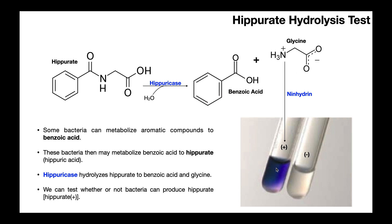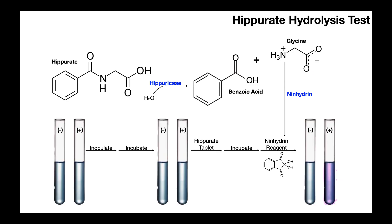If you perform a Hippurate hydrolysis test and the solution stays cloudy or clear, that's a negative test — that bacterial species does not express Hippuricase and cannot hydrolyze Hippurate. But if you get a result that is bluish violet, that test is positive, because the ninhydrin reacts with glycine, a product of Hippurate hydrolysis. This reaction with ninhydrin determines whether the bacteria expresses Hippuricase.